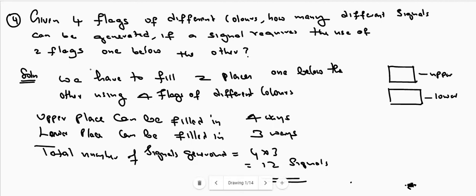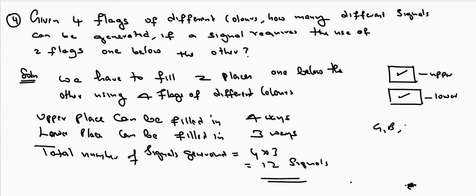Here, given four flags of different colors, we have to form some signals using two at a time. That is, four flags of different colors — how many different signals can be generated if a signal requires the use of two flags, one below the other? The upper and lower places are to be filled using the four flags. The upper place can be filled using one of these four flags.